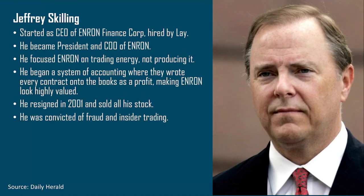Jeffrey Skilling is the other key character in this play. He started off as CEO of Enron Finance Corporation and was hired directly by Kenneth Lay, eventually becoming president and CEO of Enron. He focused mainly on trading energy, though the company didn't actually produce any energy. He began an accounting system where every contract was written onto the books as a profit, making Enron appear highly valued — though this was incredibly hollow as many contracts were not seen through. He resigned in 2001, sold all his stock, and was convicted of fraud and insider trading.